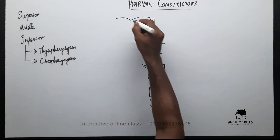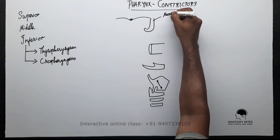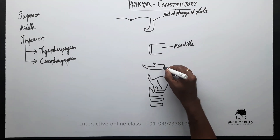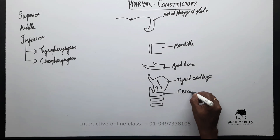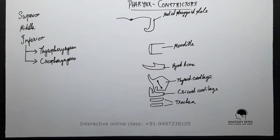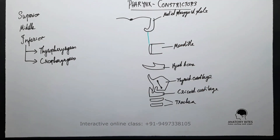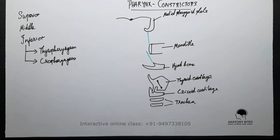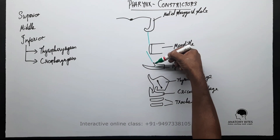This is the base of skull and that structure is the pharyngeal tubercle. There are few ligaments and membranes here from the pterygoid process to the mandible — there is a pterygomandibular raphe. That is the stylohyoid ligament which extends above from the styloid process, and below it is attached to the lesser horn of the hyoid bone.